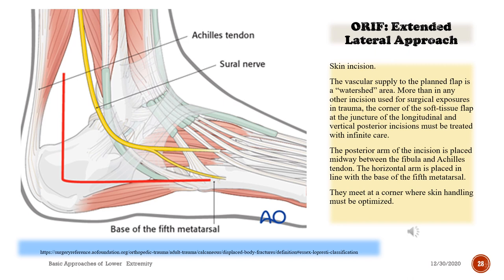The extended lateral approach: the vascular supply to the planned flap is a watershed area. More than any other incision used for trauma exposures, the corner of the flap at the juncture of the longitudinal and vertical posterior incisions must be treated with infinite care. The posterior arm is placed midway between the fibula and Achilles tendon; the horizontal arm is in line with the base of the fifth metatarsal. They meet at a corner where skin handling must be optimized.